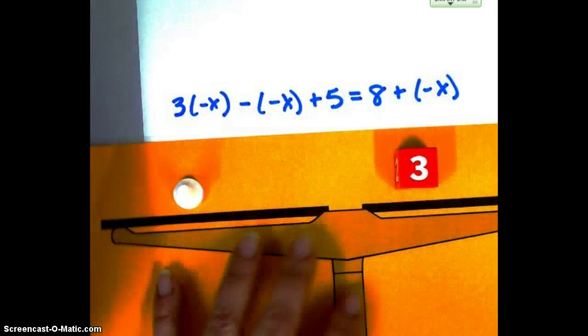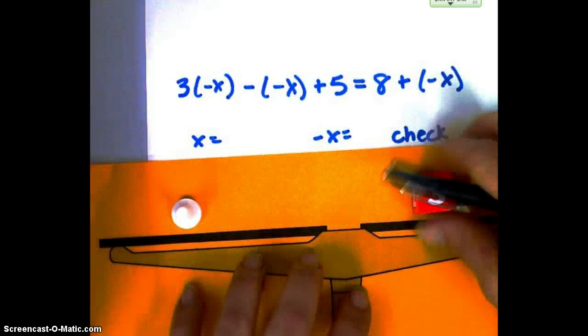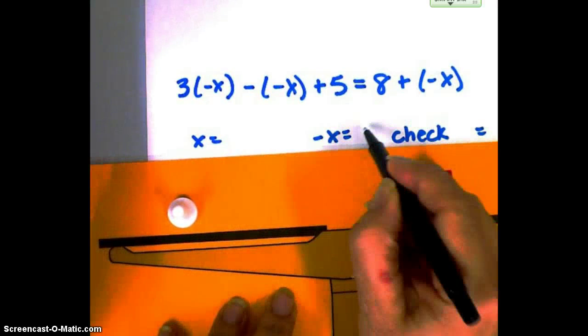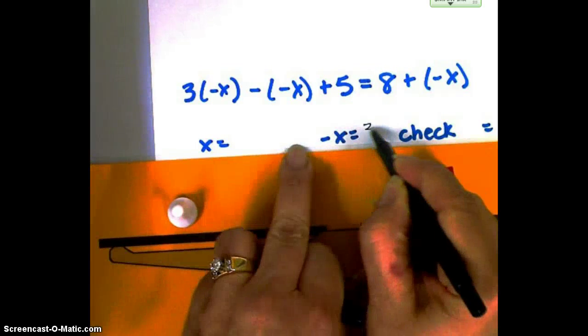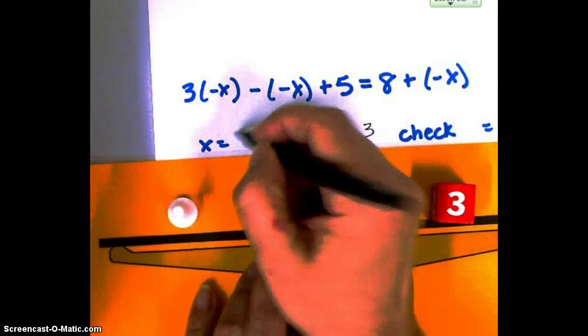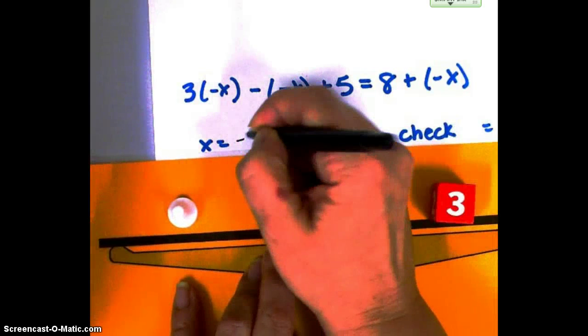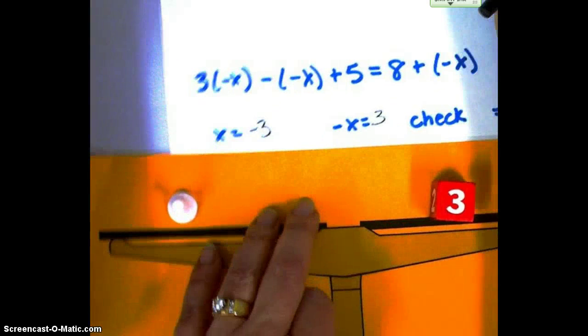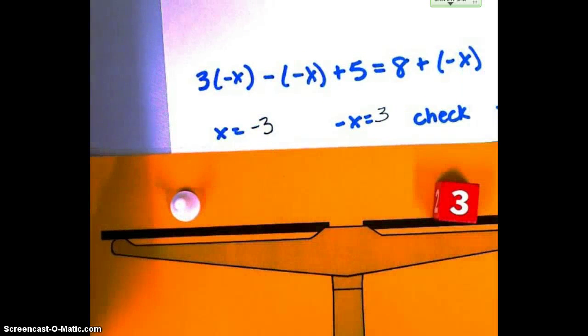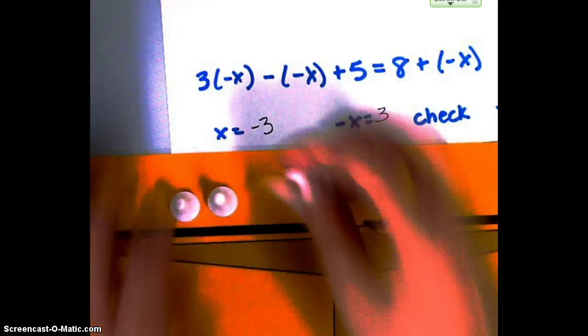So 1x equals, I shouldn't say that, a negative x equals 3. That would mean my x would equal a negative 3. And we can check it out. Let's build it back up the way it was. Three white ones on this side.